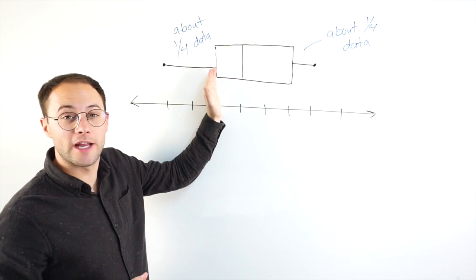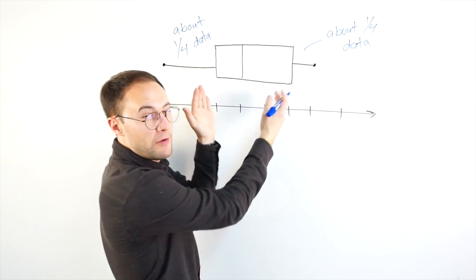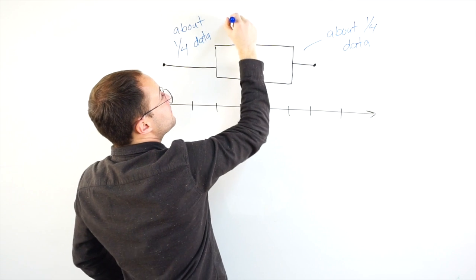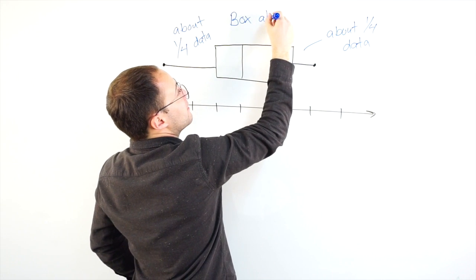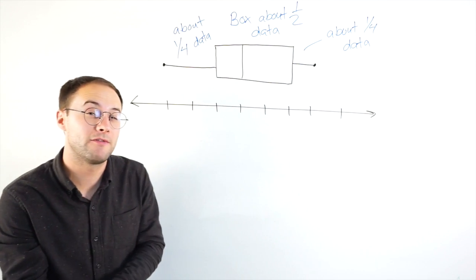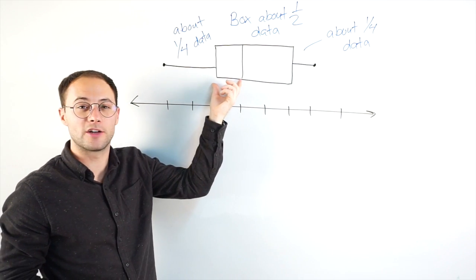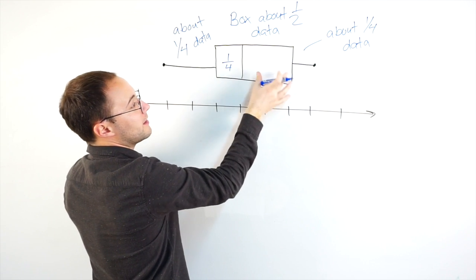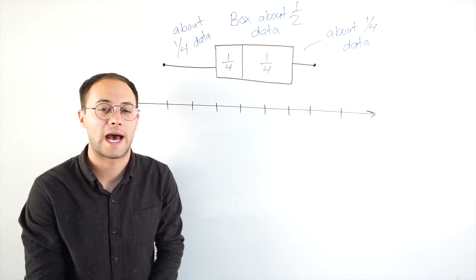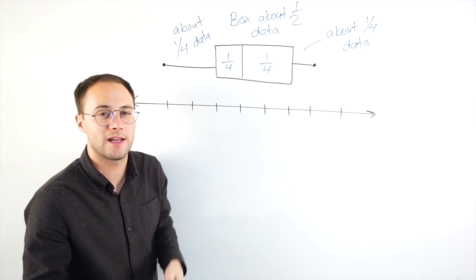Now, the box. Here is my first quartile. Here's my third quartile. If you remember interquartile range, we're talking about the middle half. So the box is about one-half of the data. And if you want to break it down even more, from the median to the first quartile here, this little section, that's a fourth. And this little section here is a fourth. So put them together, that's what makes the whole box one-half. So keep that in mind. I would put this in your notes. That's going to help you hopefully understand the next example.